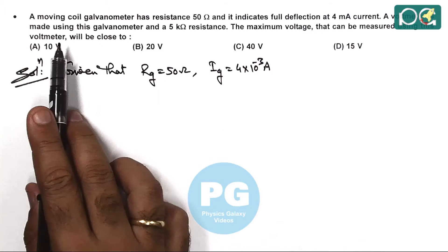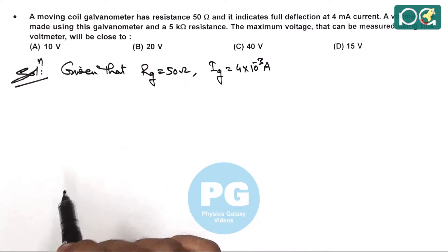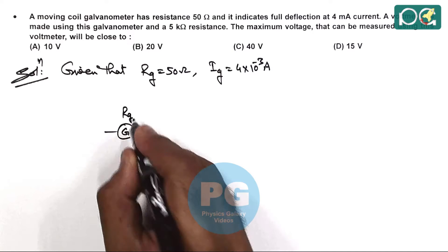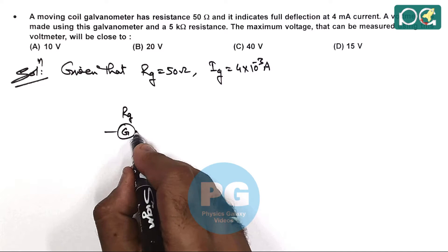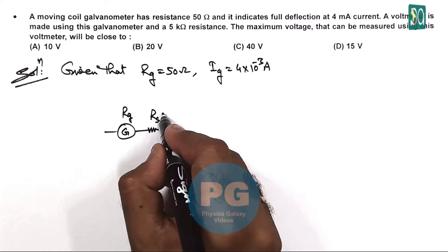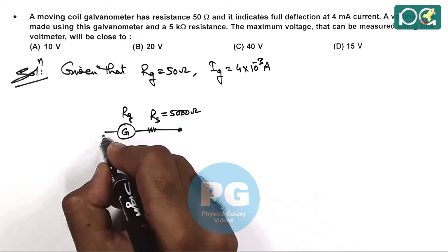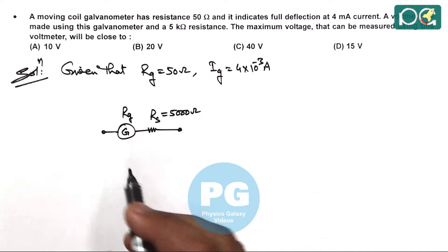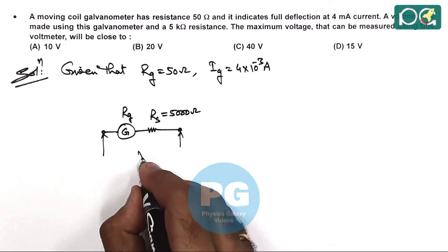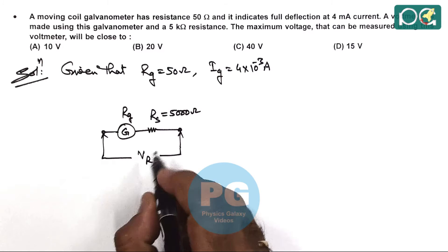Now it is used in making a voltmeter with a 5 kilo ohm resistance. If this galvanometer having RG is connected in series with the shunt resistance of which the value is 5000 ohms, we are required to check at what voltage it will give full deflection. So if we connect a voltage across it, which is the range of voltmeter.